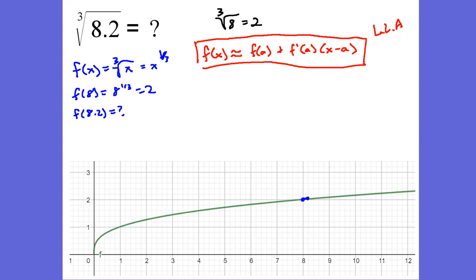f of x, f of some value, that's our 8.2, is roughly, it's approximation, f of a plus f prime of a times x minus a. Now, if you can differentiate what's your x and what's your a, this is going to be very important. Use this formula over and over again. So our x is going to be 8.2. Our a is going to be 8.